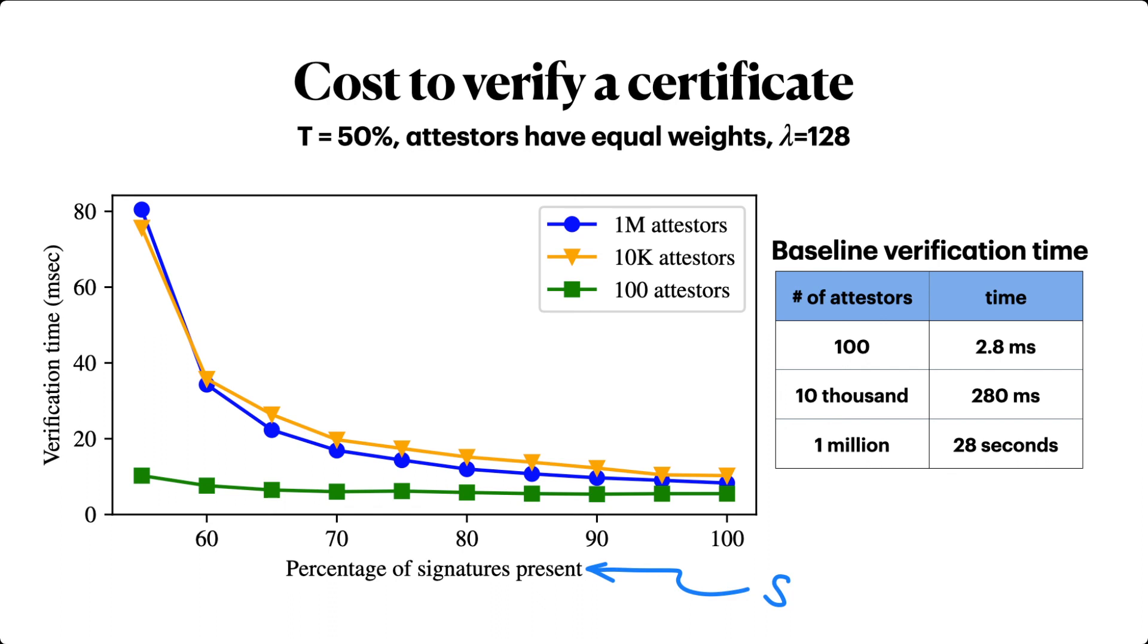The predominant cost is verifying all of the attester's signatures in order to determine the total signed weight, and this is easily parallelized. In total, generating a compact certificate is at most a factor of two more expensive than the naive baseline.